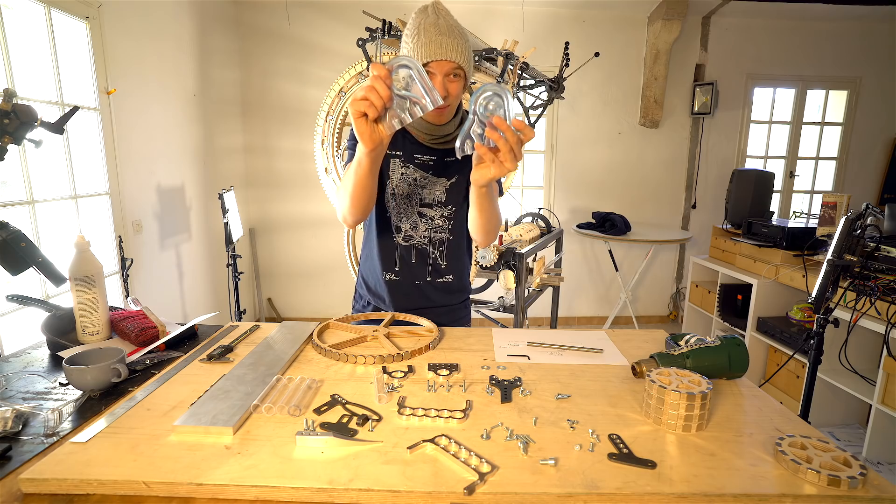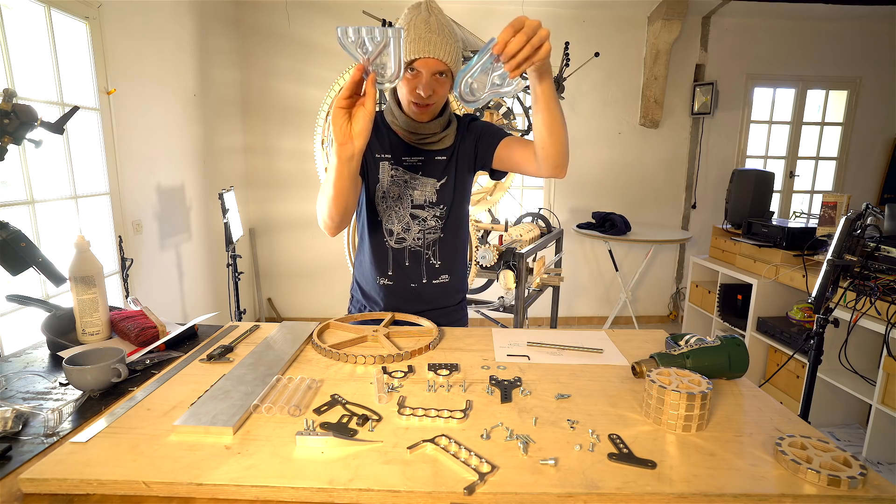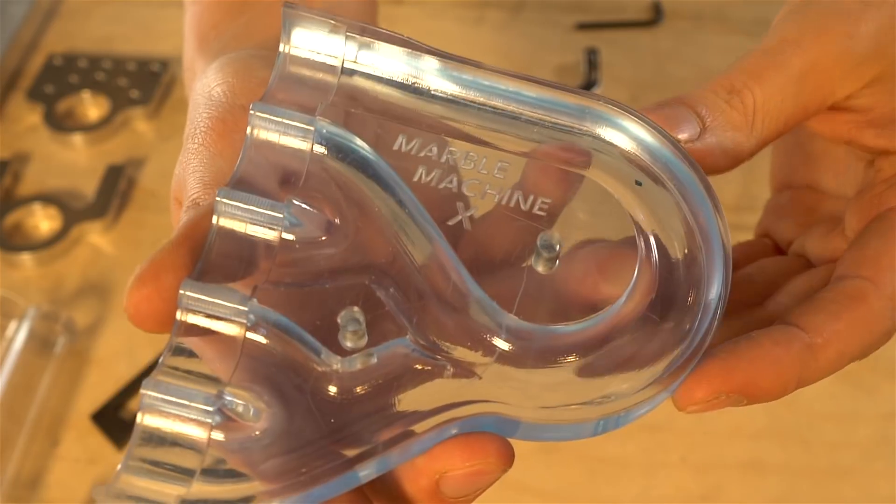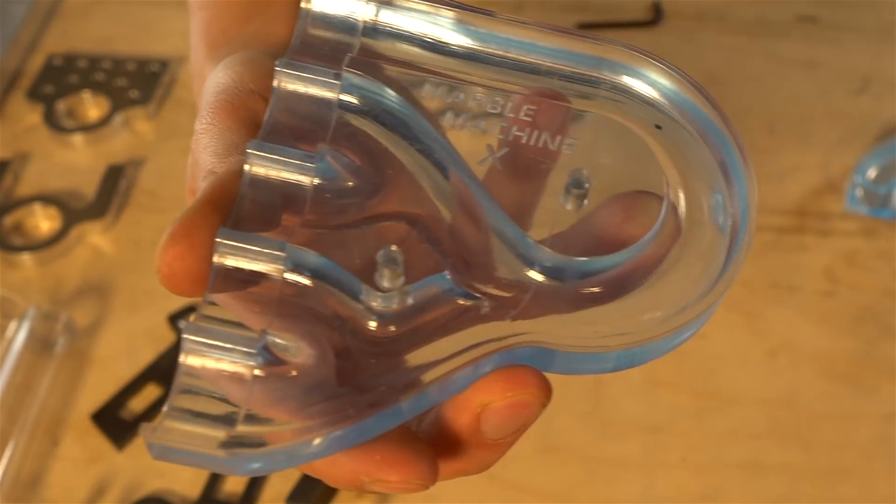Let's start with the pièce de résistance, these ones from Alex. This is a CNC block of acrylic and it's a marble divider one to four.